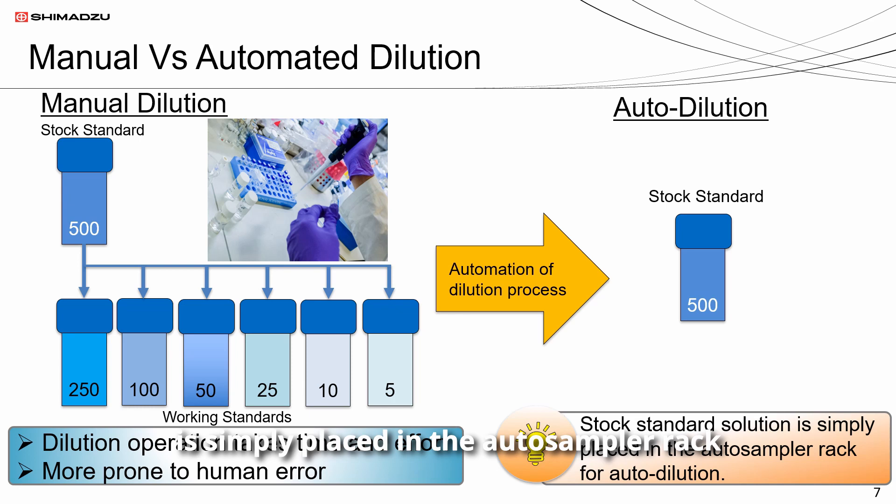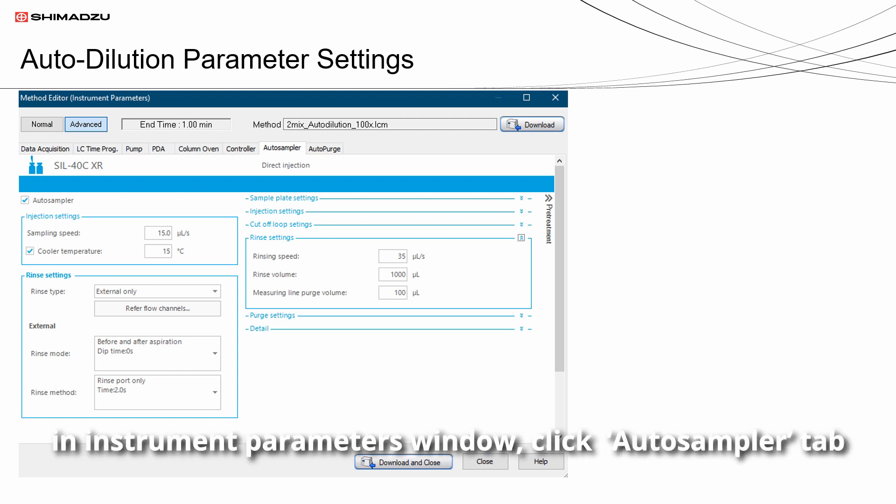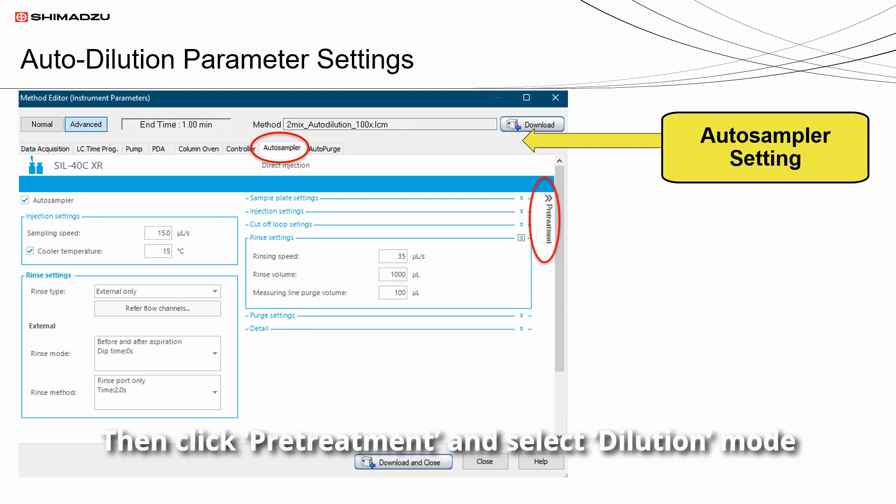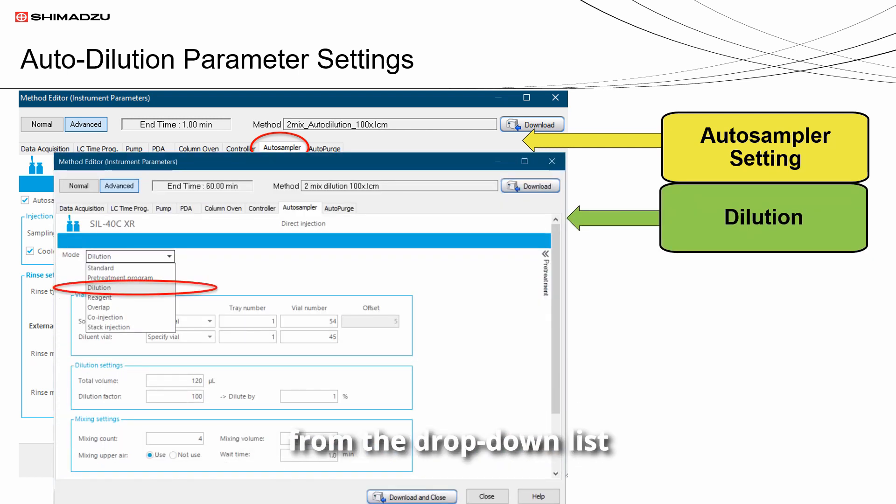To do the auto dilution parameter settings, in the instrument parameters window, click autosampler tab, set the rinse volume to 1000 microliters for each injection, then click pre-treatment and select dilution mode from the drop-down list.